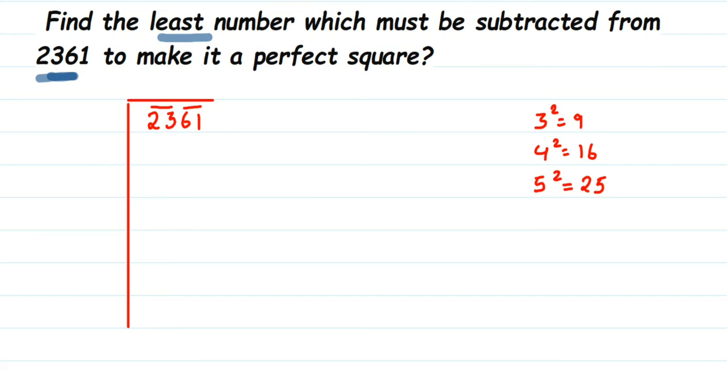So 4 times 4 is 16. Subtract it. When you subtract it, you will get 7 as a remainder. Now drop the next number. So when you're dropping, drop the entire pair which is 61.